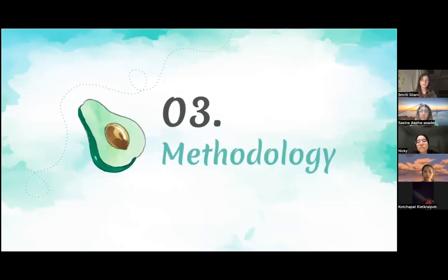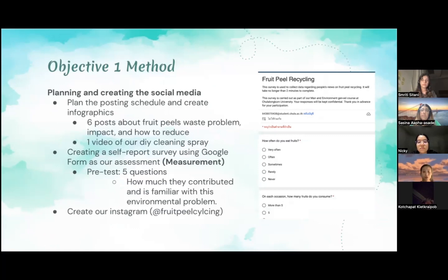Moving on to the methodology. For our method to meet objective one, we first started by planning and creating our social media. We planned the posting schedule and created the infographics needed for our posts. In total, we made six infographics which included information about fruit peel waste problems, its negative impact, and how we can reduce it through recycling DIY. We also made one video of our DIY cleaning spray. After this, we created a self-report survey using Google Form as the pre-test. The pre-test included five questions which were used to assess how much the participants contributed to fruit peel waste and how familiar they are with this topic.